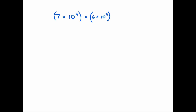Now that we have some understanding of how standard form works and how we use it, the simplest way to demonstrate how we multiply and divide using standard form is to look at some examples. On the screen here we have a typical example of the multiplication of two figures given in standard form: seven times ten to the power four, multiplied by six times ten to the power three.